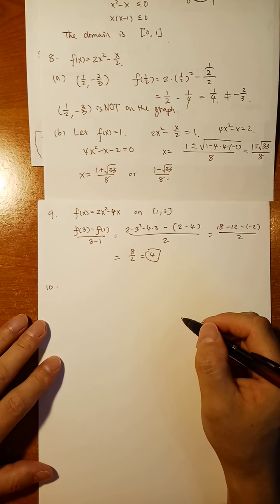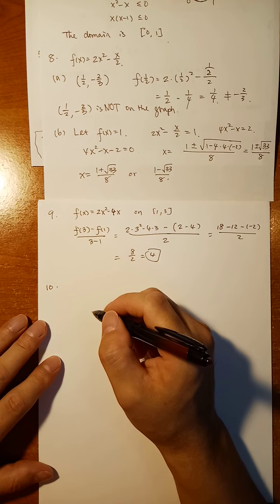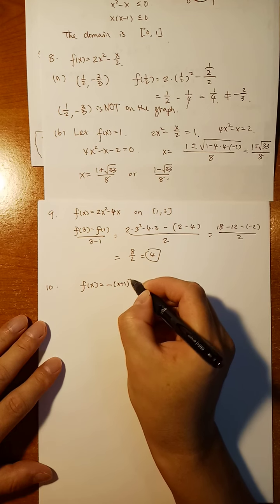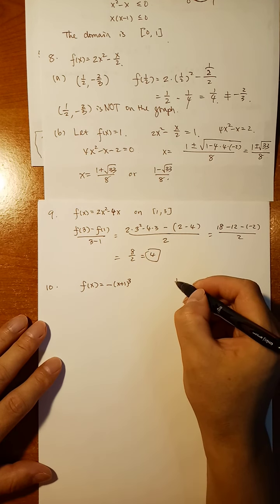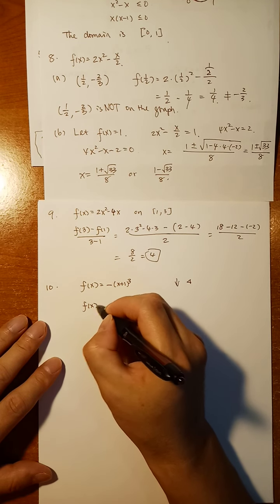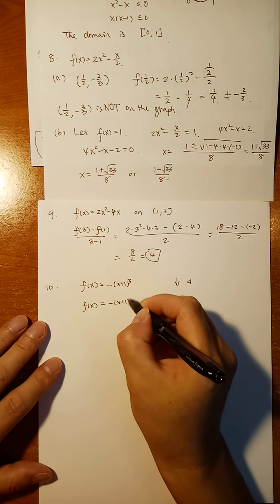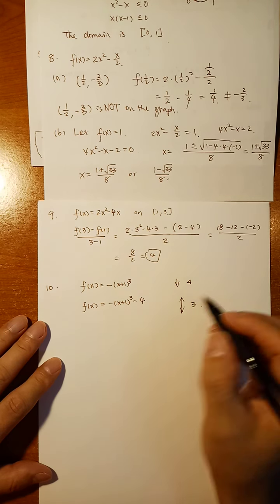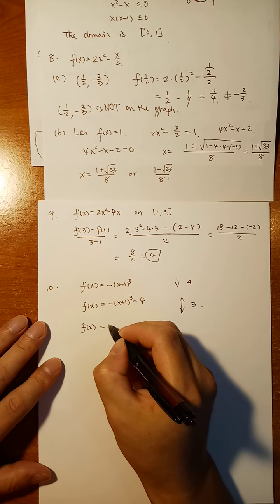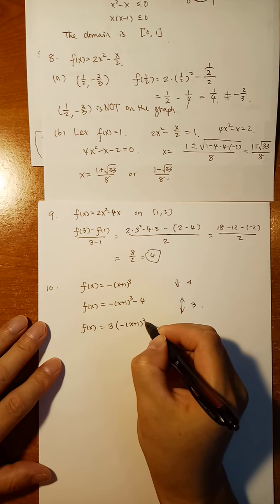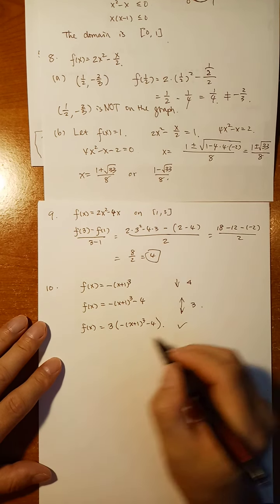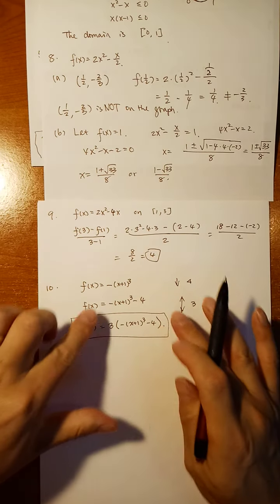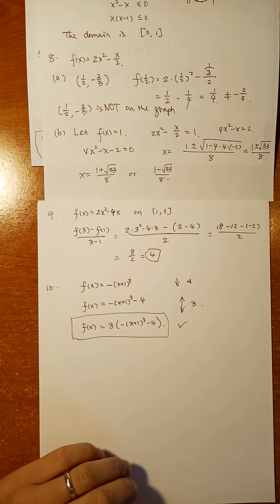Problem 10: we're going to talk about function shifts and stretches. Start with the original function, then translate 4 units down. Then apply a stretch by a coefficient of 3. Stretching by a coefficient of 3 means everything is multiplied by 3, not just the first term.